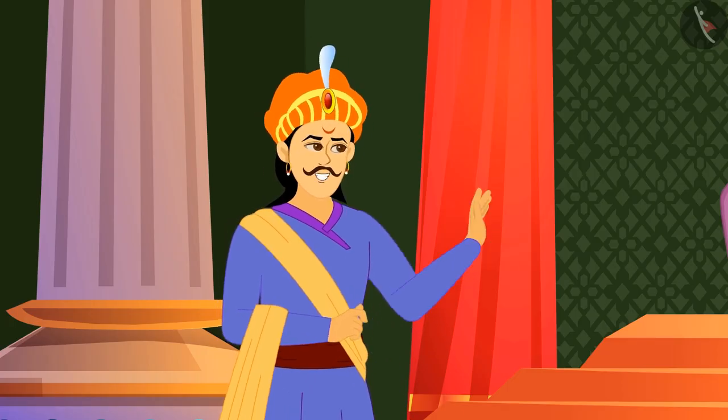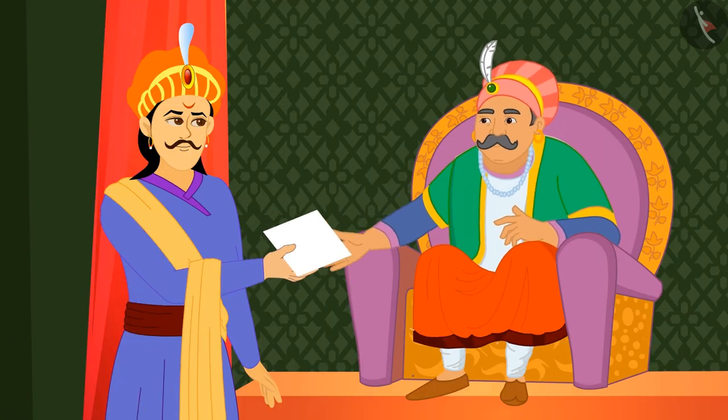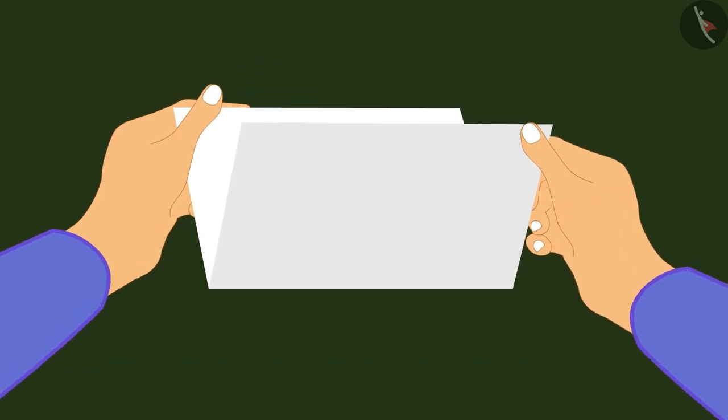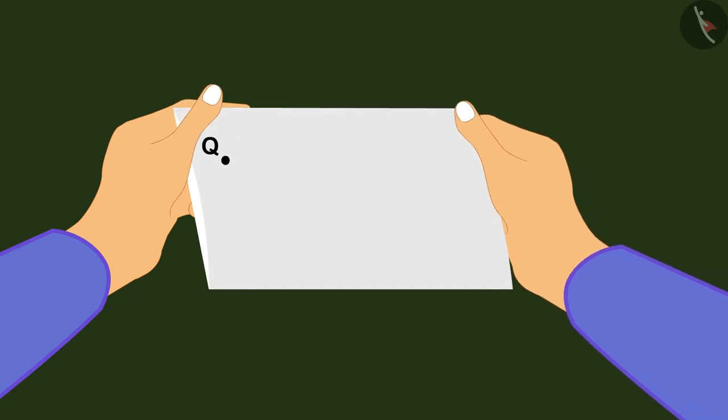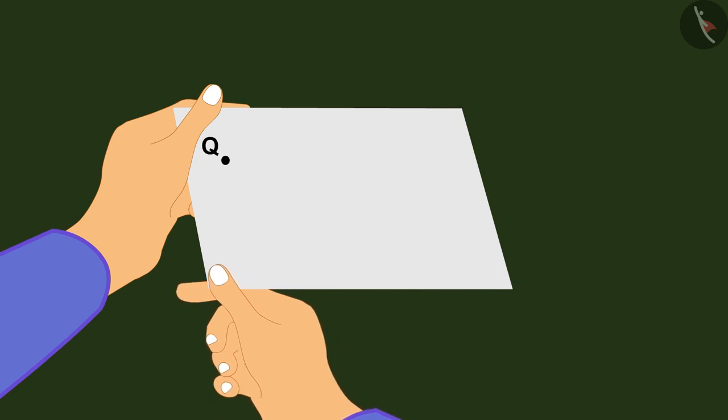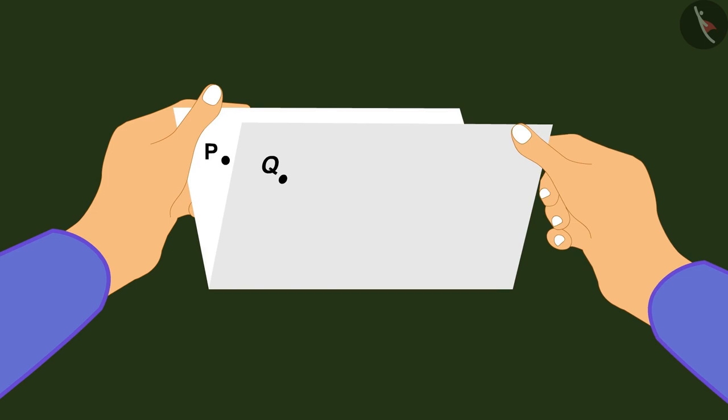Birbal smiled and said yes, sir. Birbal then took a piece of paper and folded it into two equal parts. Suppose I fold over any point P of one portion of this sheet of paper and hold it coincident with any point Q on the other portion like this. While these points are held tightly together by the thumb and with the forefinger of one hand, I can then crease the fold with the thumb and forefinger of the other hand. Then, if I just extend the crease in both directions like this, I can form a straight line.